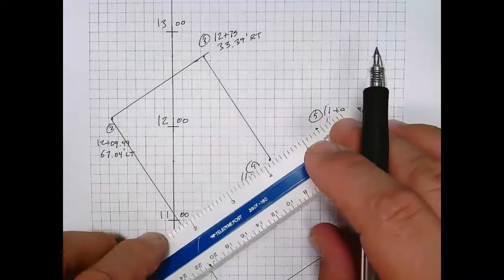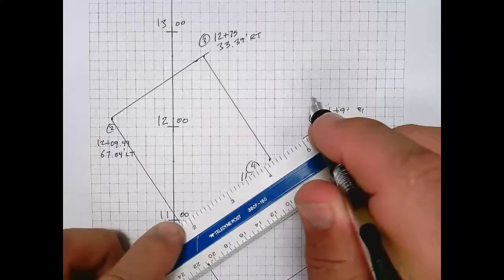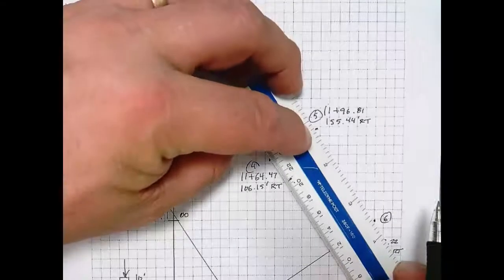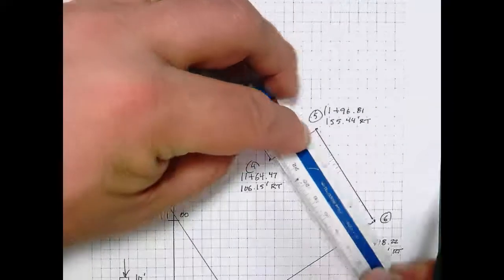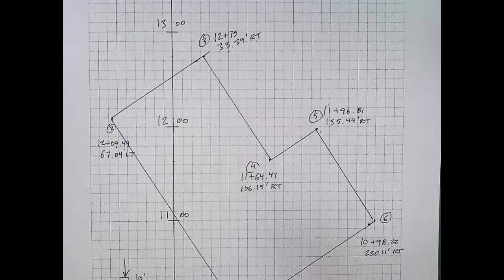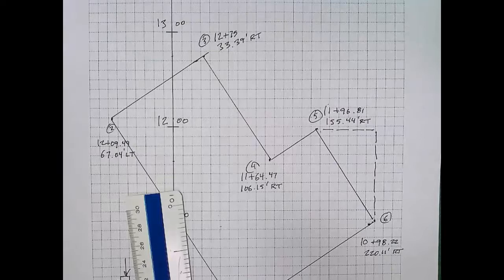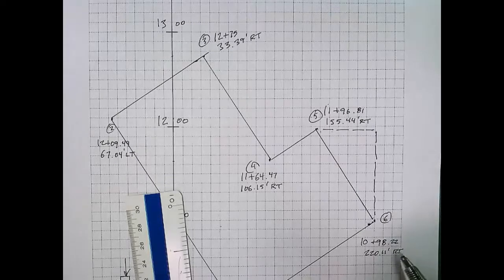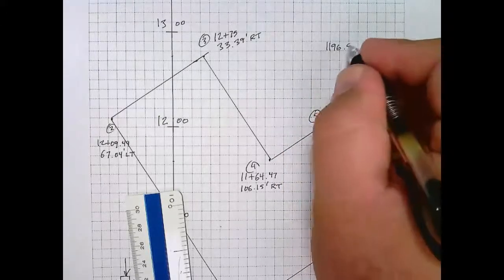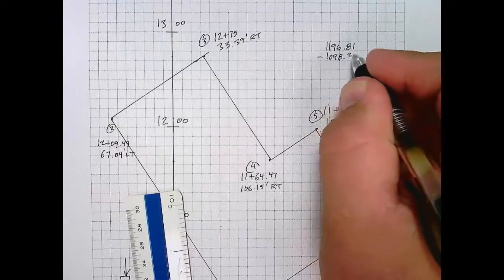We will need to prove that to ourselves here in just a moment. Before we can prove that to ourselves, let's look back at the problem statement. Item 1b says compute the area of the building. Before we can compute the area, we need to know the lengths of the sides. All we know right now are effectively station and offset or coordinates at the corners. So we're going to use Pythagorean theorem to find each side length. Notice every side is the hypotenuse of a right triangle that you see drawn with dashed lines.